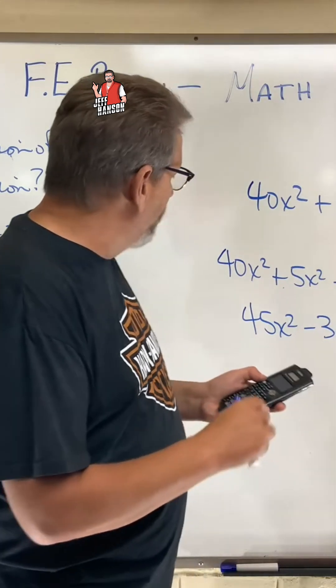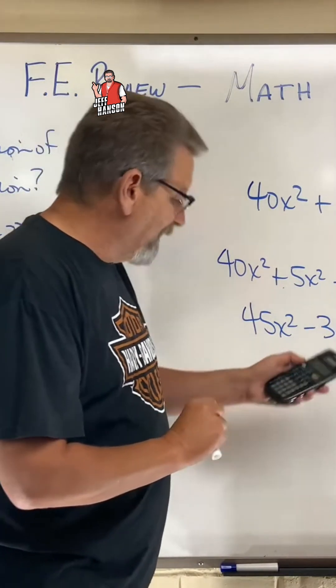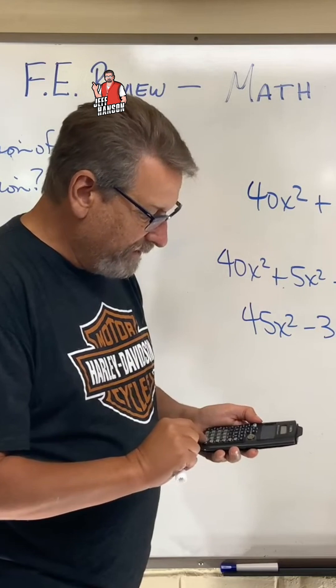So I'll go to polysolve and A is going to be 45, 45, ENTER. B is going to be minus 30, minus 30, ENTER.